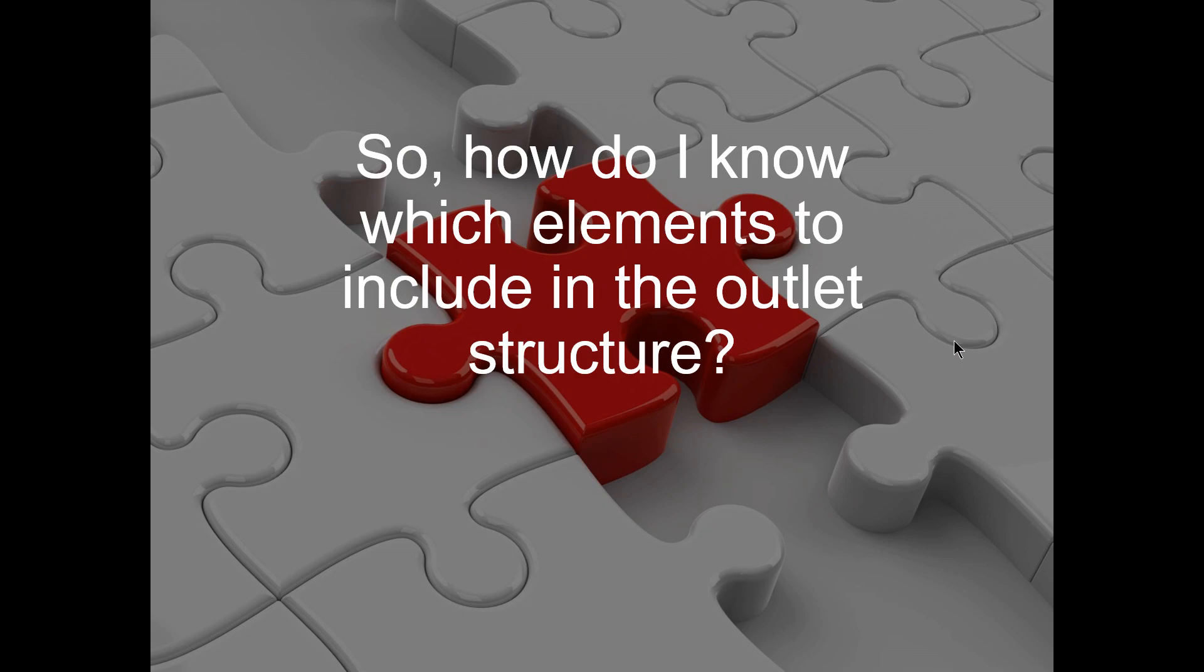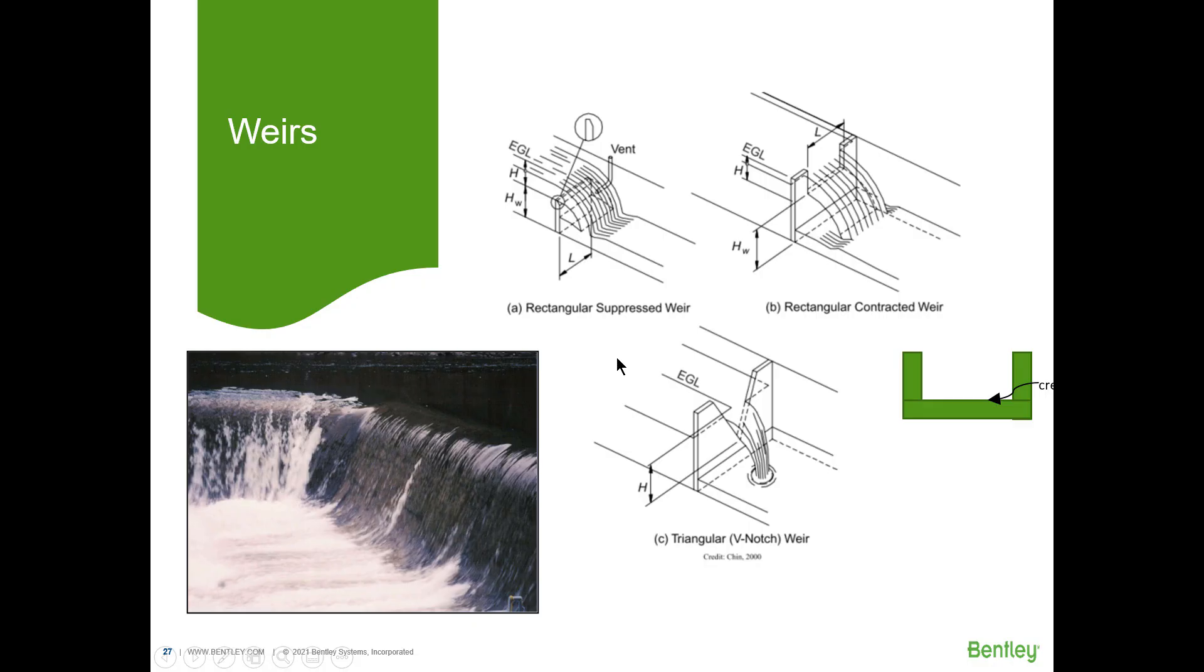So how do I know which elements to include in my outlet structure? The truth is this is a trial and error process but understanding how each element behaves can help you in your initial selection. Once you come up with your initial selection it's a matter of changing the number of elements, for example the number of orifices that you have, their elevation within the outlet structure, their diameter, same is true for any other structure type. You just play with those variables until you get to your target flows. So let's take a look at them one at a time.